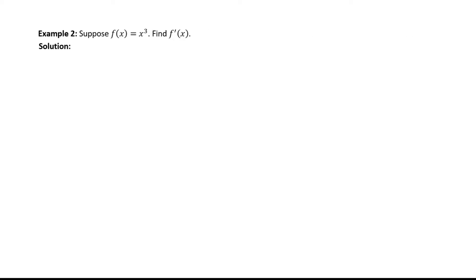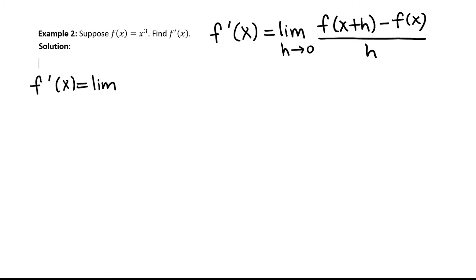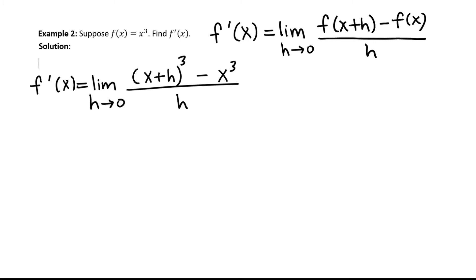Example: suppose f of x equals x cubed. Find f prime of x — that means find the derivative. We're going to use the derivative formula: f prime of x equals the limit as h approaches 0 of f of x plus h minus f of x, divided by h. So f prime of x equals the limit as h approaches 0 of x plus h cubed, minus x cubed, divided by h.